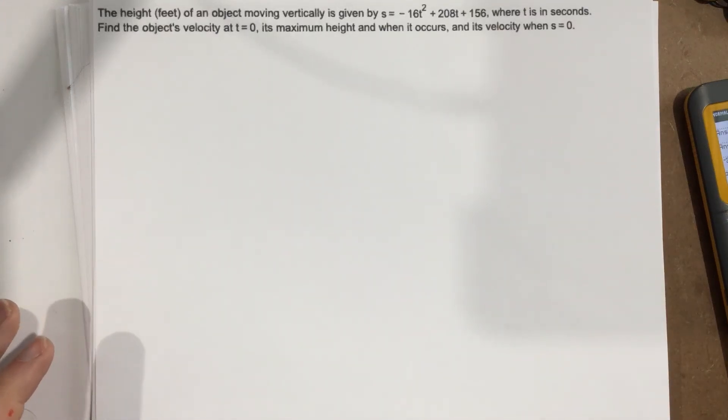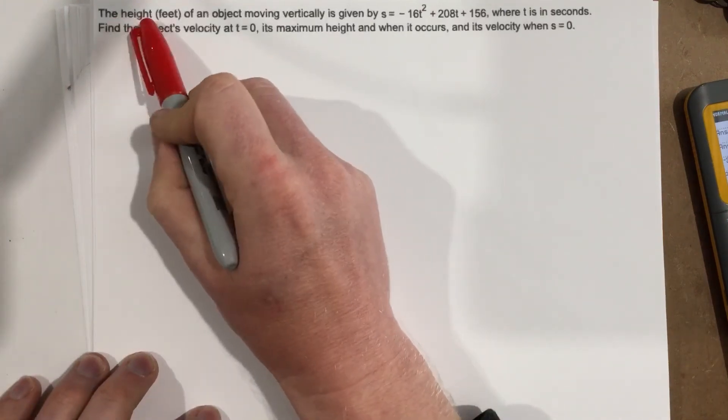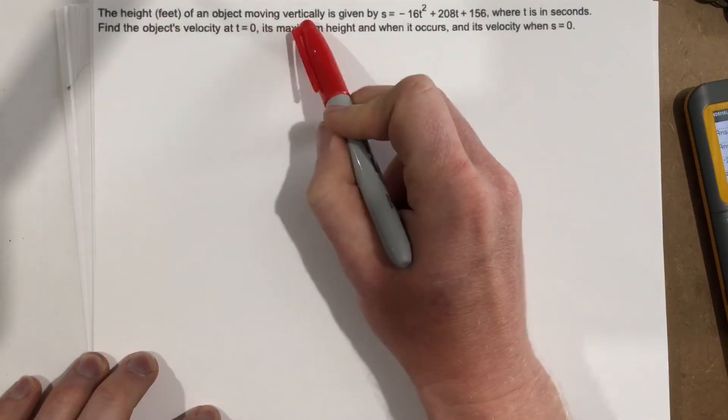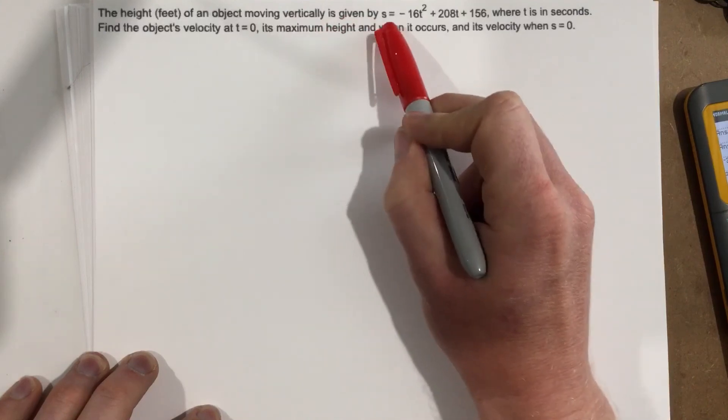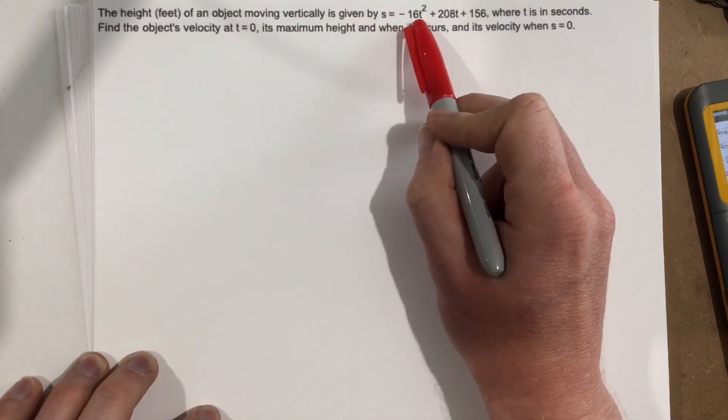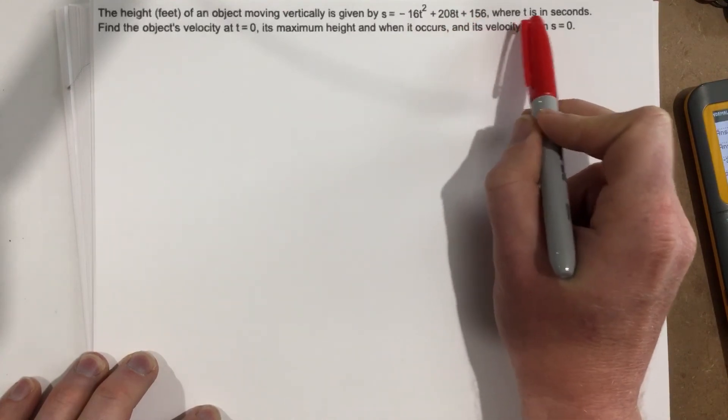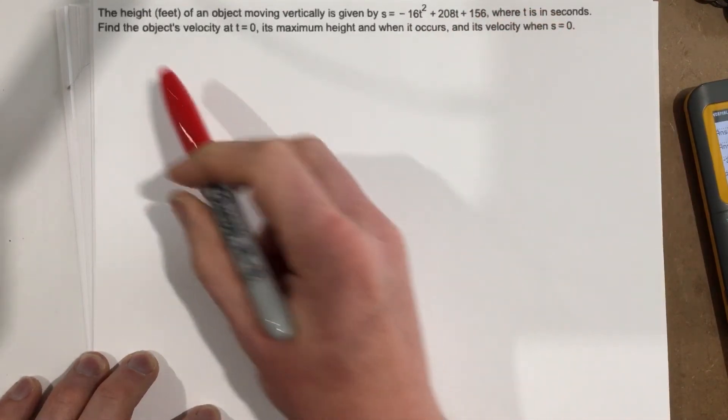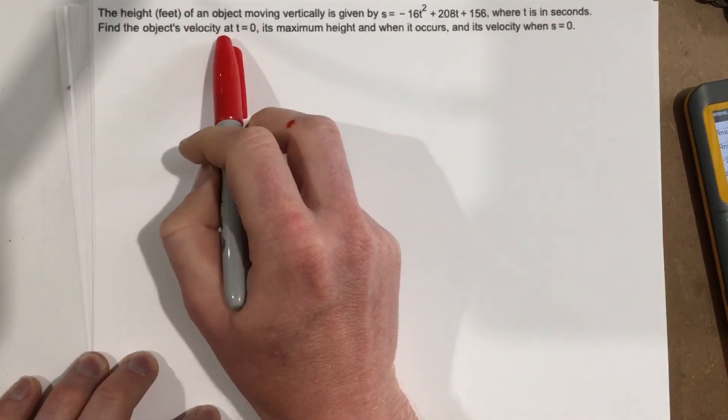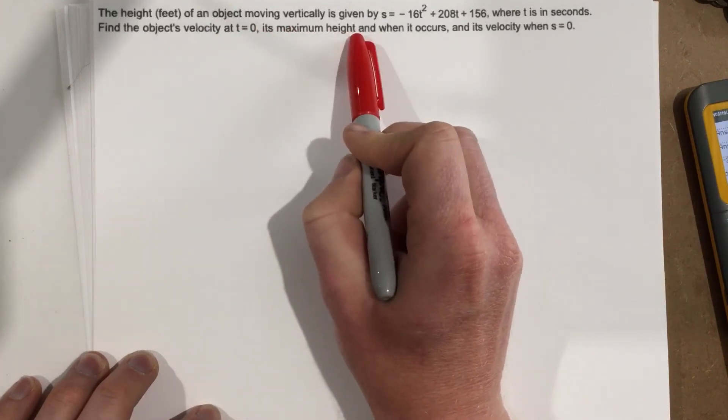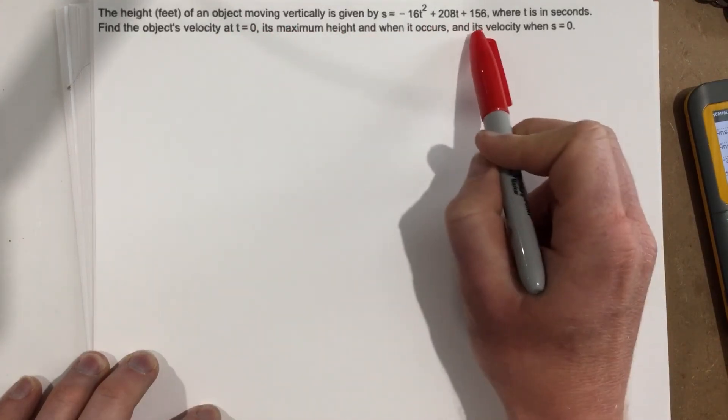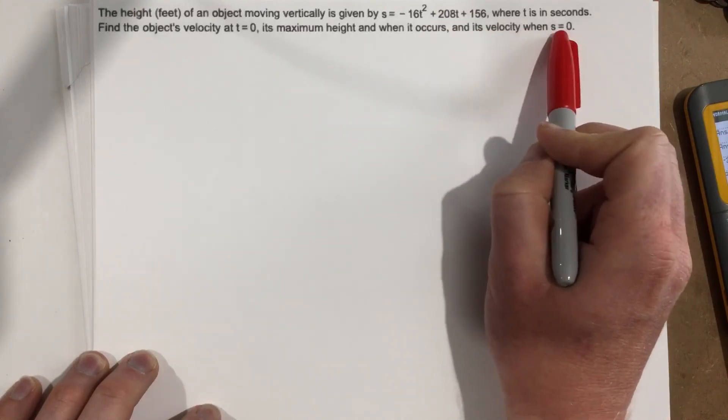This is problem number 4 from section 4.6. It says the height in feet of an object moving vertically is given by s equals negative 16t squared plus 208t plus 156, where t is in seconds. Find the object's velocity at t equals 0, its maximum height and when it occurs, and its velocity when s equals 0.